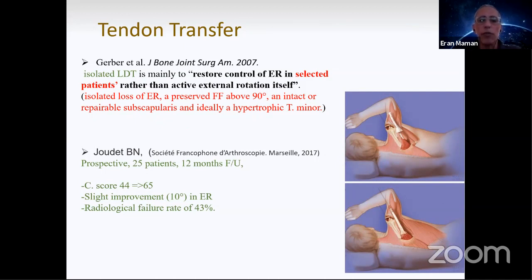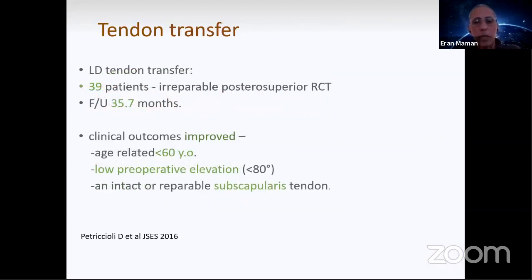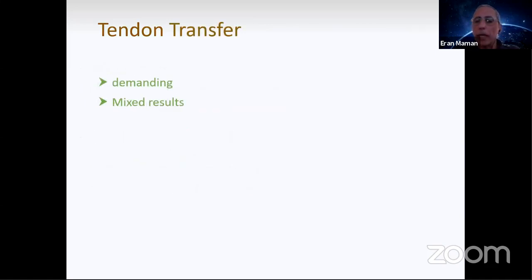Judet, prospective 25 patients, one-year follow-up, constant score improved from 44 to 65. Remember the numbers - patients with irreparable cuff tear usually start around 34 to 45 constant score. But the results show only slight improvement in external rotation and radiological failure was up to 43%. Another study of 39 patients with follow-up of 35 months showed clinical outcome improved in patients younger than 60, with low preoperative elevation less than 80. Tendon transfer is demanding and results are mixed.